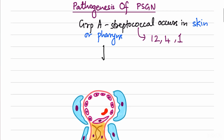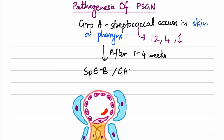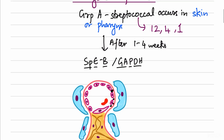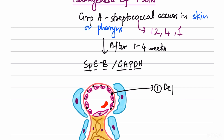One to four weeks after the streptococcal infection resolves, streptococcal antigens — mainly streptococcal exotoxin B antigen or glyceraldehyde phosphate dehydrogenase (GAPDH) — circulate and reach the endothelium of the glomerulus. Below the endothelial layer they stimulate the formation of immune complexes, which get deposited sub-endothelially, stimulating inflammation.